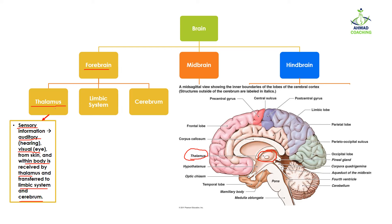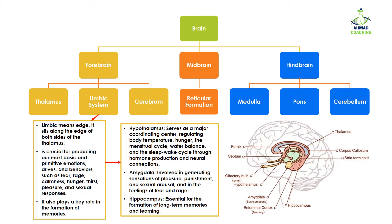The limbic system sits along the edges of both sides of the thalamus — that is why it is called 'limbic,' meaning edge. This system is crucial for producing our most basic and primitive emotions and behaviors such as fear, rage, calmness, hunger, thirst, pleasure, and sexual responses. It also plays an important role in the formation of memories. The limbic system has three parts: hypothalamus, amygdala, and hippocampus.